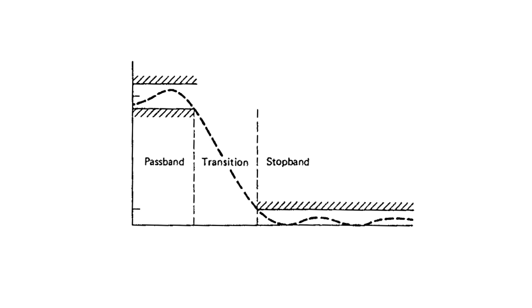Instead of defining just one cutoff frequency, we typically define a lower and an upper cutoff frequency — or corner frequencies — that define this transition band. The second key difference is that in the pass band, instead of a perfect unity gain, you allow for some ripple, specified by delta P, the maximum allowable pass band ripple. The third difference is that in the stop band, instead of perfectly attenuating all frequencies, you allow a little noise through, defined by delta sub S, which can be the maximum stop band ripple — though typically we specify a minimum stop band attenuation, which is one minus delta S.